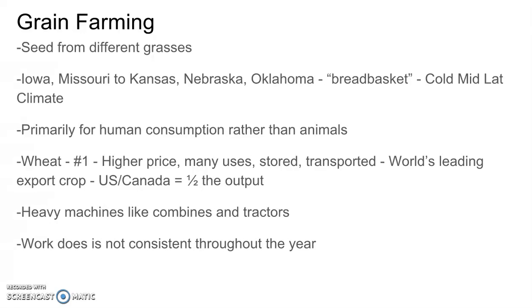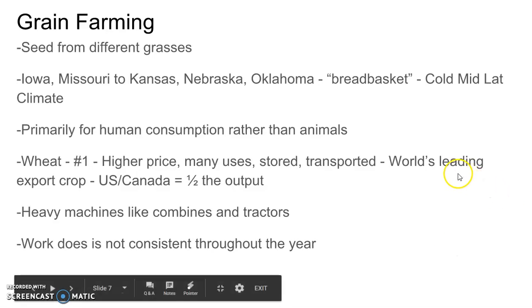Next, let's talk about grain farming. Grains are seeds from different grasses. This is located from Iowa and Missouri to Kansas, Nebraska, and Oklahoma — what's referred to in the United States as the bread basket, where so much wheat is produced for human consumption and turned into bread. This is mainly in cold mid-latitude climate zones. The grain produced in grain farming is primarily for human consumption rather than for animals. Wheat is the number one product — it commands a higher price and has many uses.